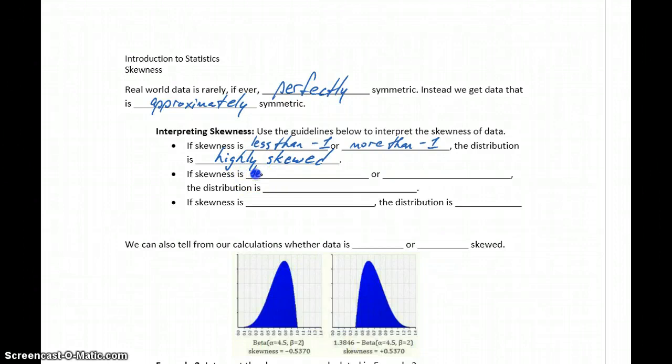If our skewness is between negative one and negative one-half, or between positive one-half and positive one... let me go back. If skewness is less than negative one or more than positive one, it's highly skewed. If it's between negative one and negative one-half, or between one-half and one, then our distribution is moderately skewed.